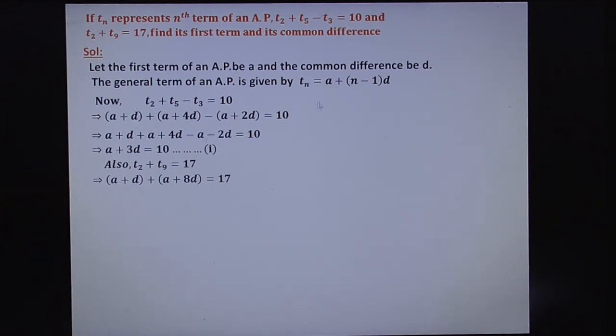How you get this? In the general term, substitute N equal to 2 for T2. Here, 2 minus 1 is 1, A plus D. For TN, substitute N equals 9. What do you get? 9 minus 1, that is 8D. Therefore, T9 is A plus 8D equals 17. So A plus A is 2A. D plus 8D is 9D. Therefore, this is 2A plus 9D equals 17. Let it be equation number 2.